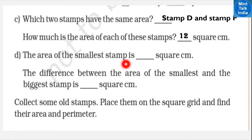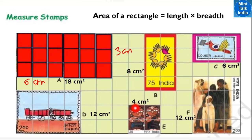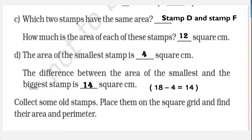The area of the smallest stamp is 4 square centimeters — that is stamp E. Now, what is the difference between the area of the smallest and the biggest stamp? We subtract: 18 minus 4 = 14 square centimeters.